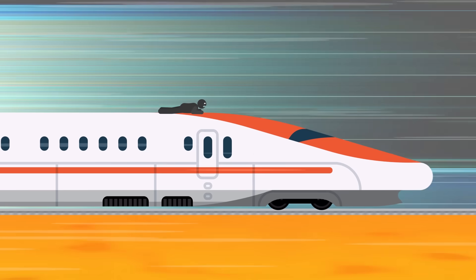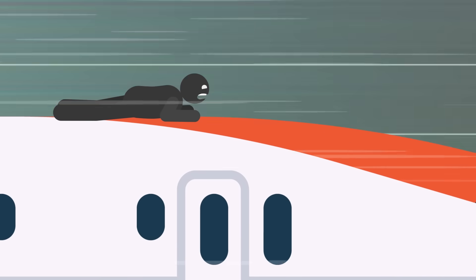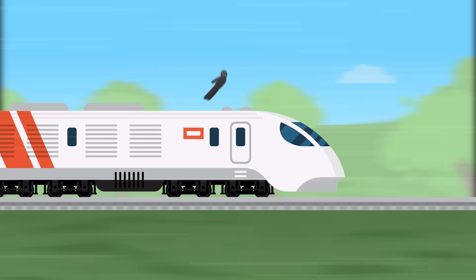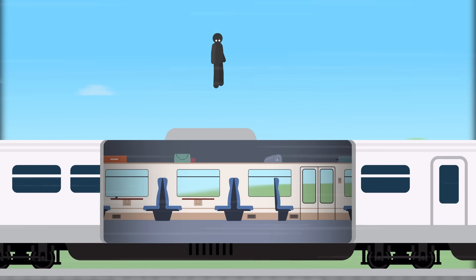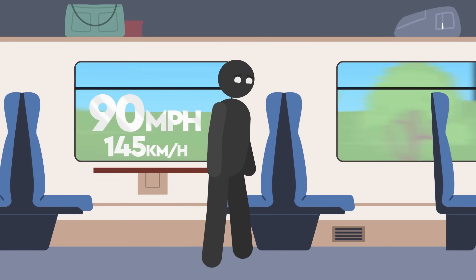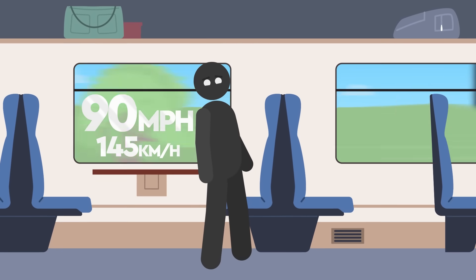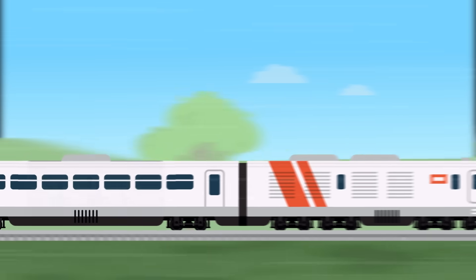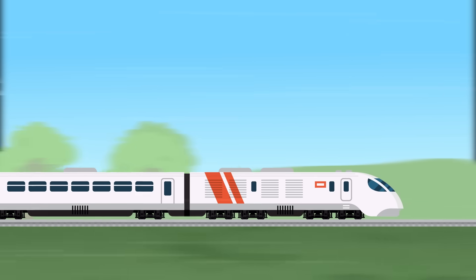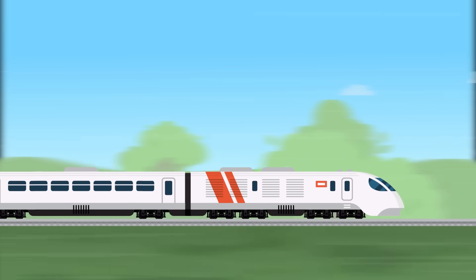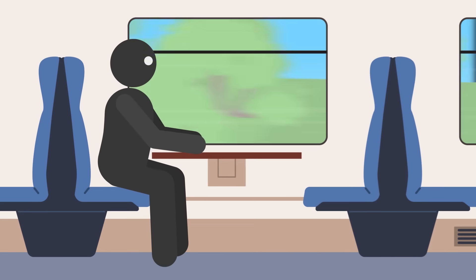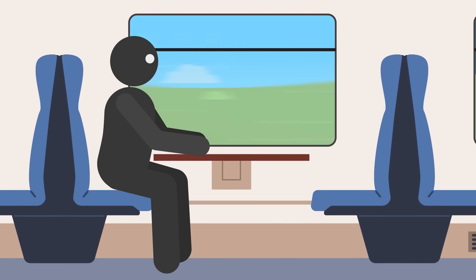Before we go all out and risk our hapless hero's neck on top of a speeding bullet train, we'll take things down a notch. Let's see how he fares in a more familiar setting, inside a train carriage, moving at a steady 90 miles or 145 kilometres per hour, typical of an intercity train service. Picture yourself on the moving train. You're on a stretch of dead straight track, and for the purpose of this thought experiment, the train is moving at a steady speed and the carriage isn't wobbling or juddering like a carriage so often does.